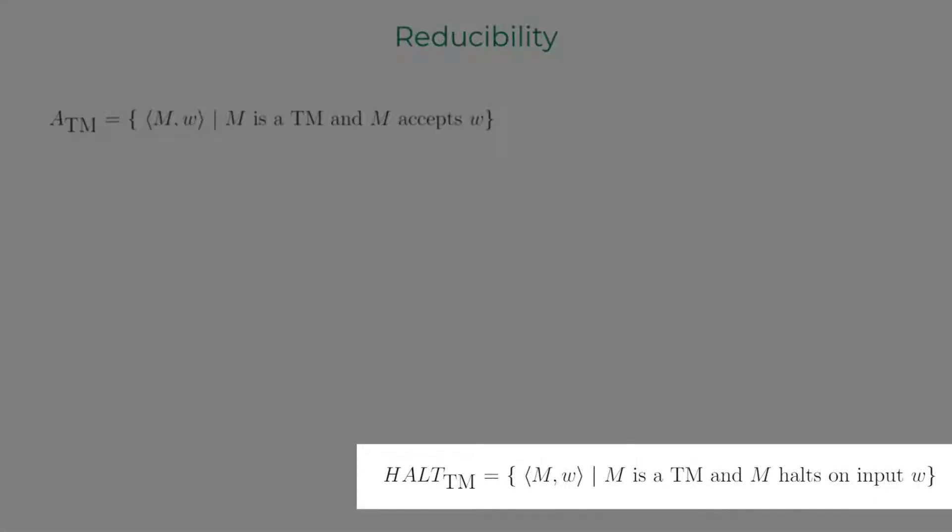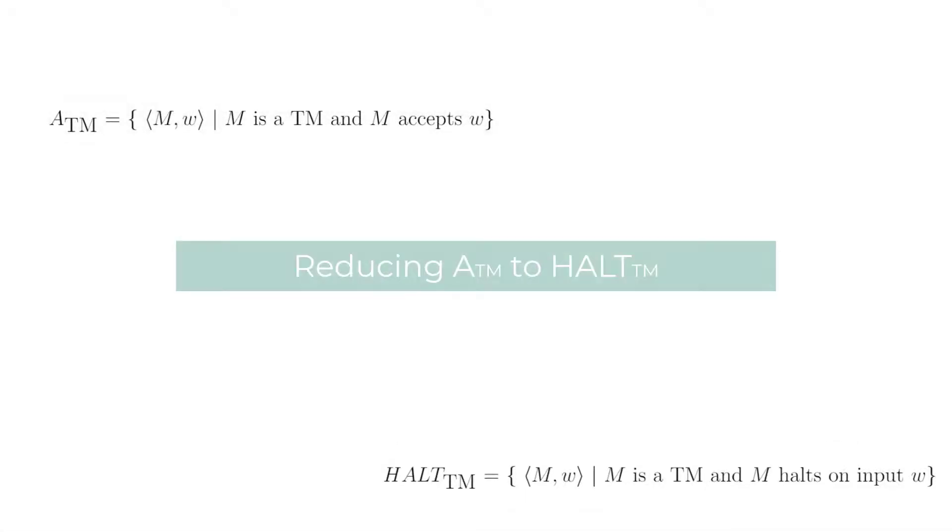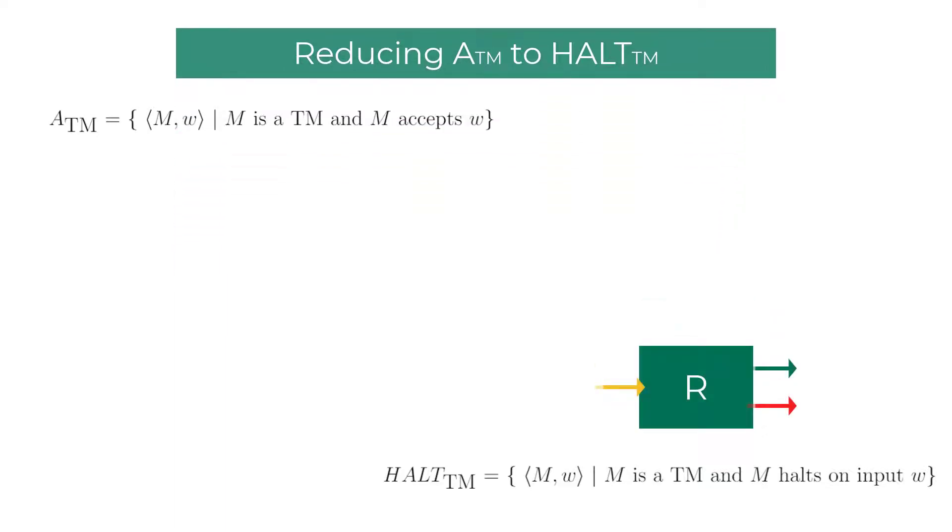It consists of strings that contain the pair Turing machine description M and the strings for which the machine M halts. Using the technique of proof by contradiction we shall prove that HALTTM is undecidable. So the first step is to assume that a decider exists for HALTTM.